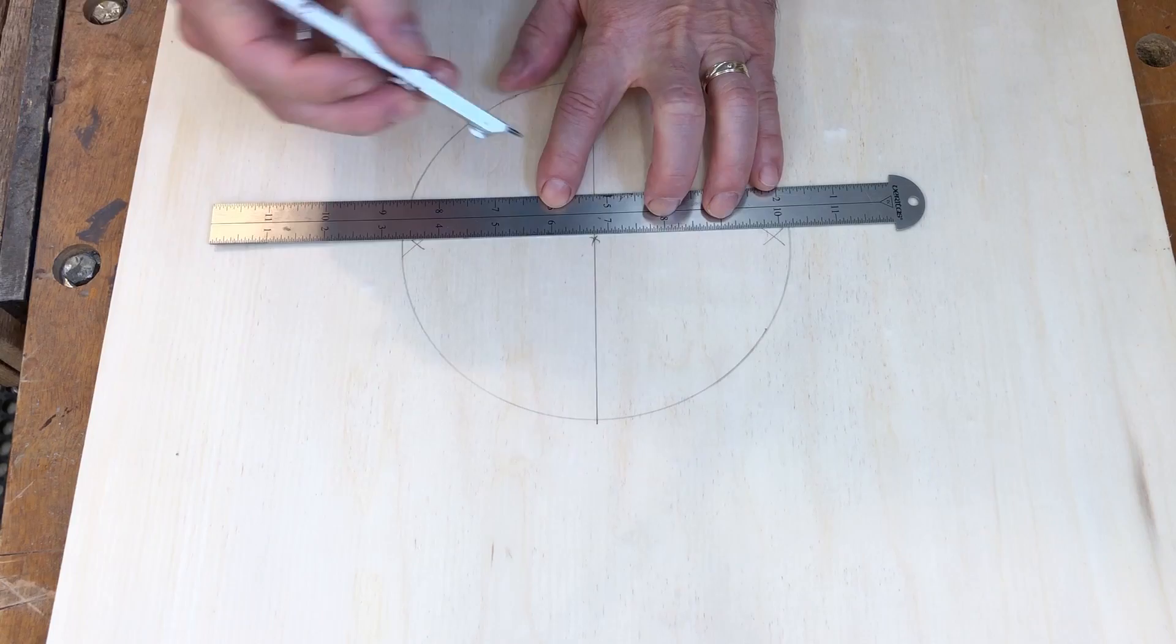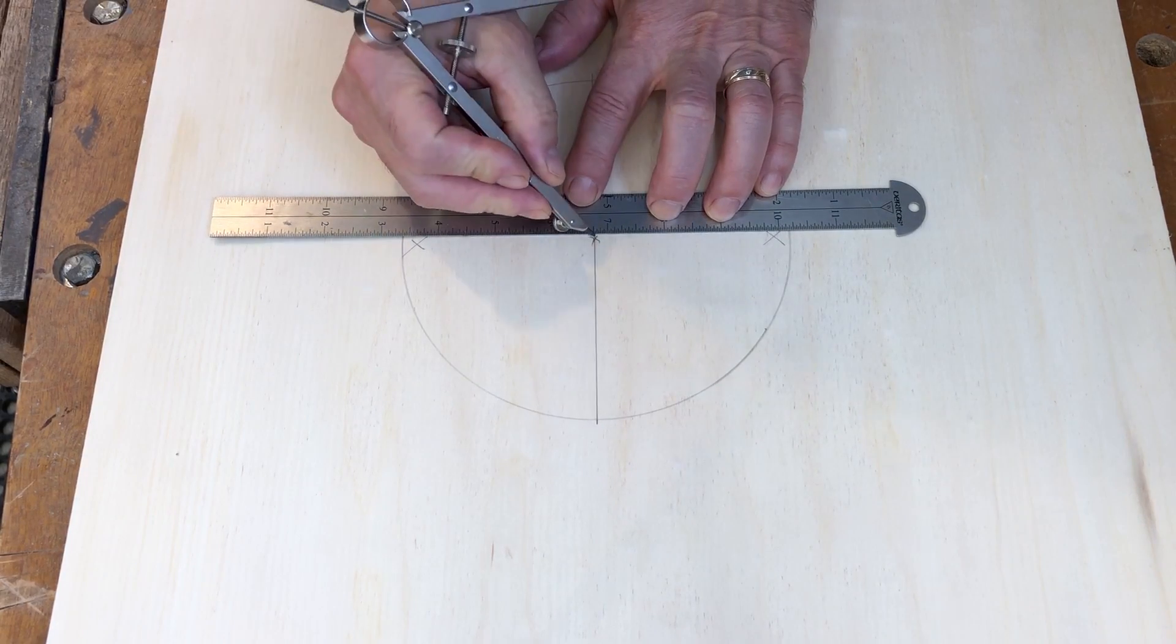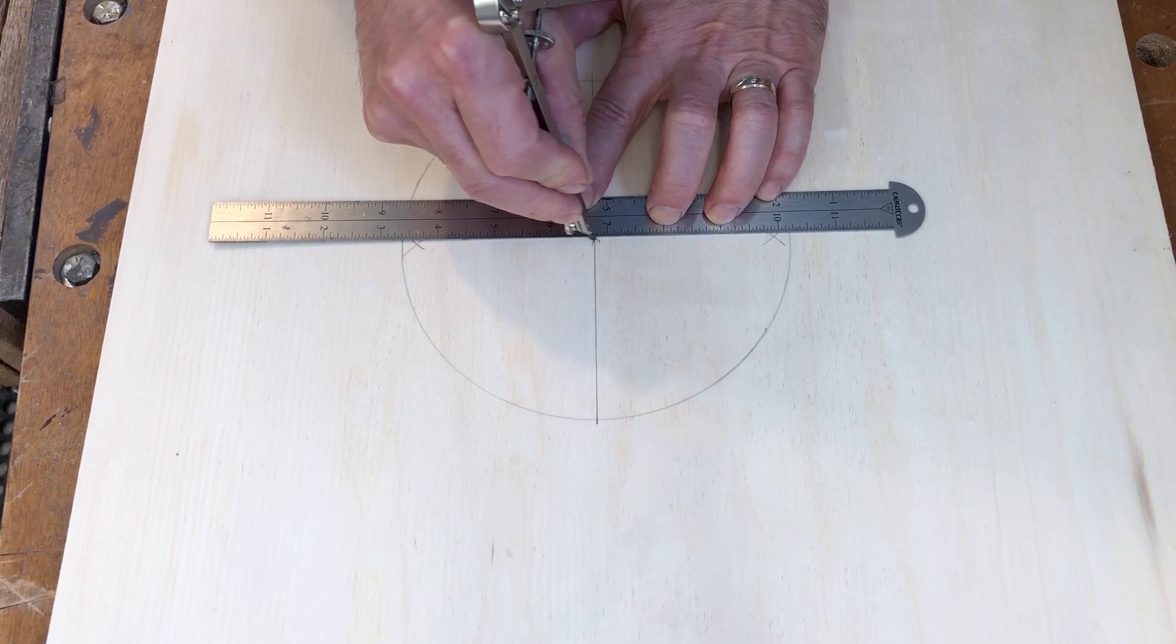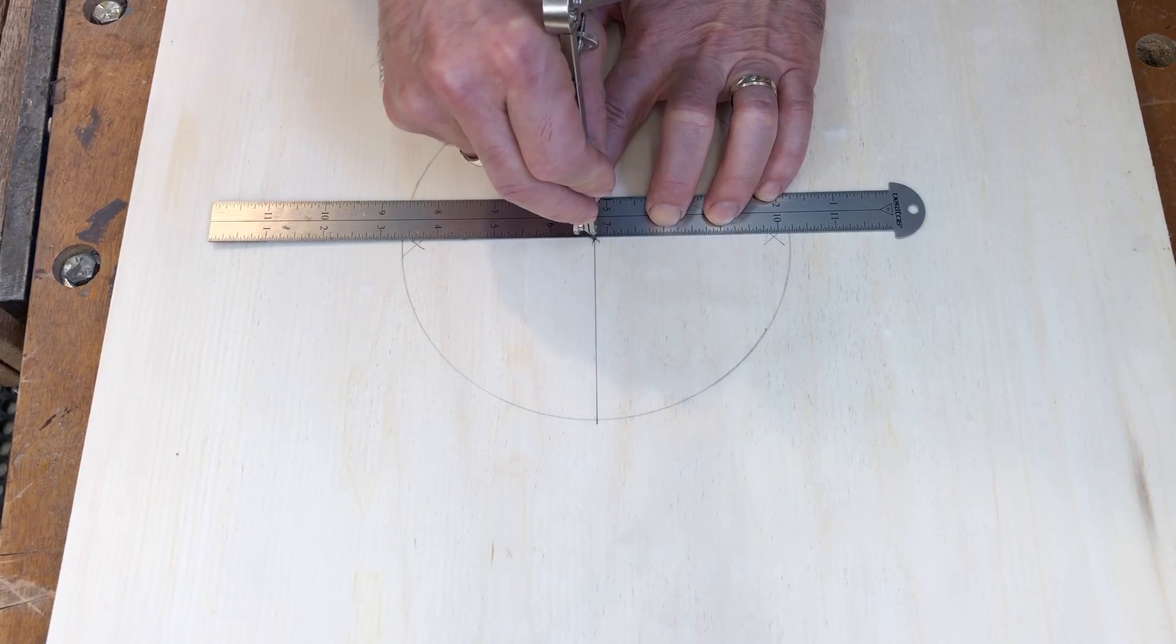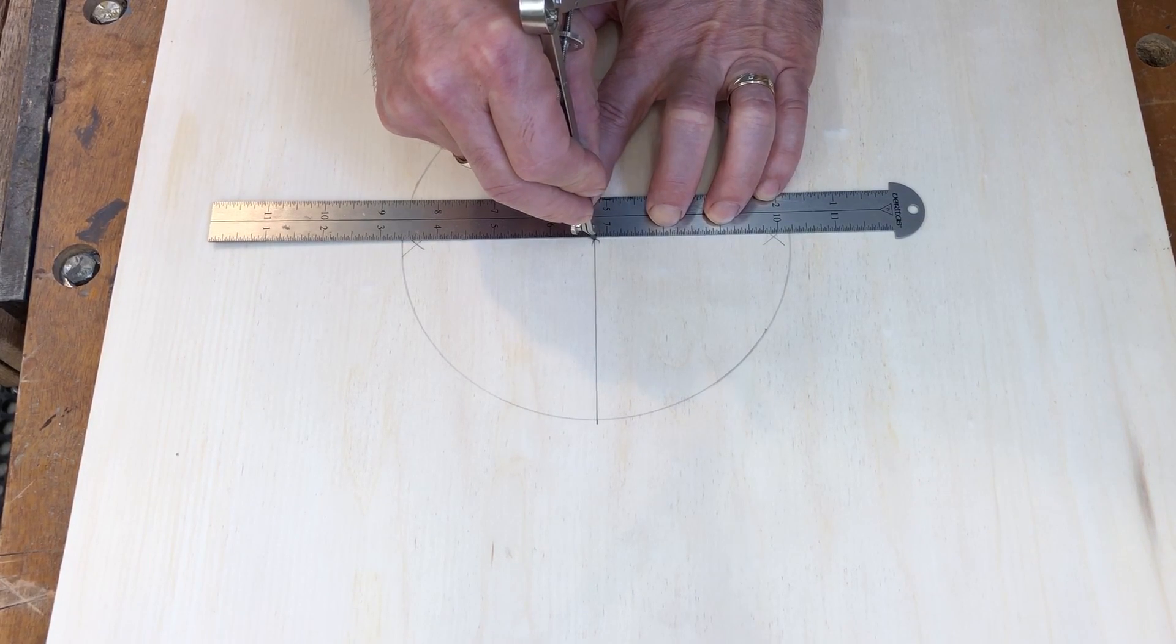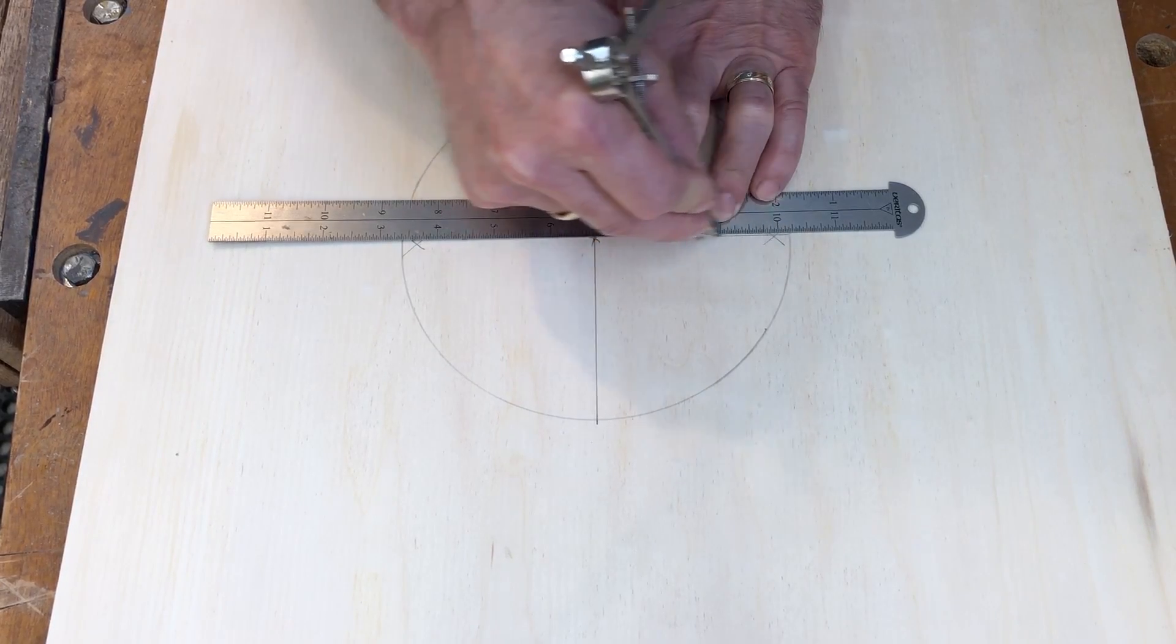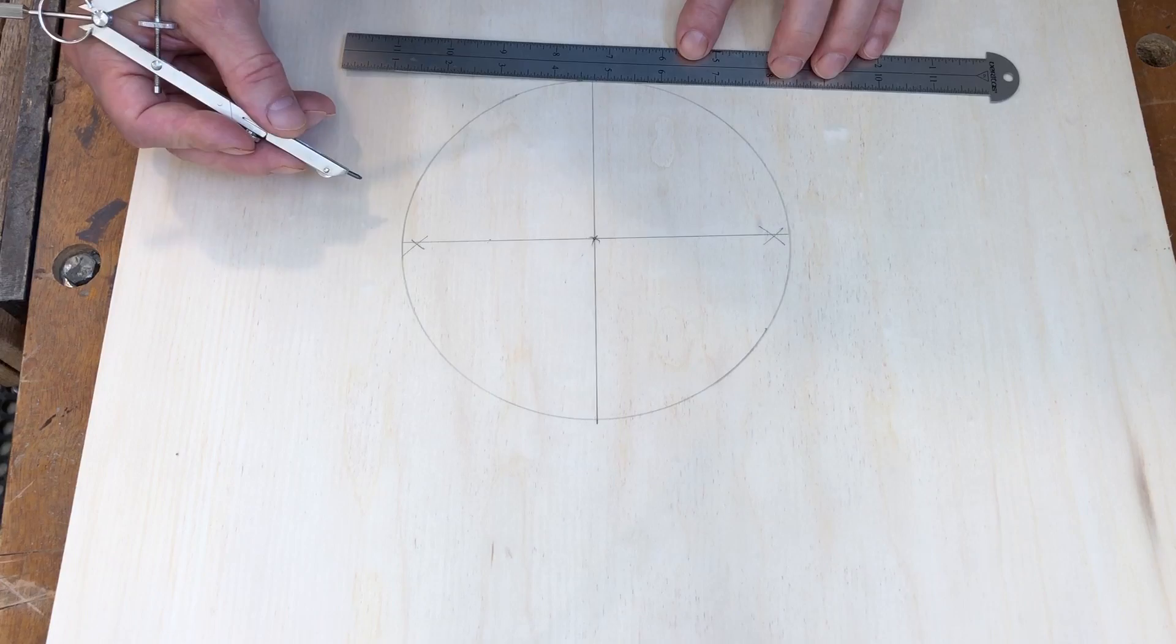Going back to the ruler, I'm going to set that again in the center point and align it with those two intersections, and draw a line across the circle again. Now the circle is divided into four parts.